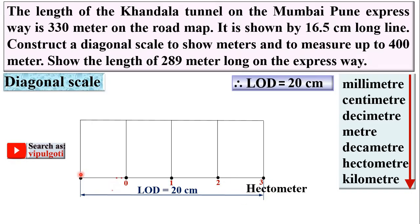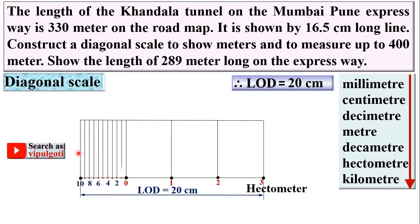Now divide the first division into 10 equal parts and number them 0, 2, 4, 6, 8, 10. Draw vertical lines through all these points using the roller scale. Since 1 unit represents 1 hectometer, dividing 1 hectometer by 10 gives decameters. Now divide the height into 10 equal divisions and number them 0, 2, 4, 6, 8, 10. Since 1 decameter is divided into 10 parts, each part represents 1 meter.